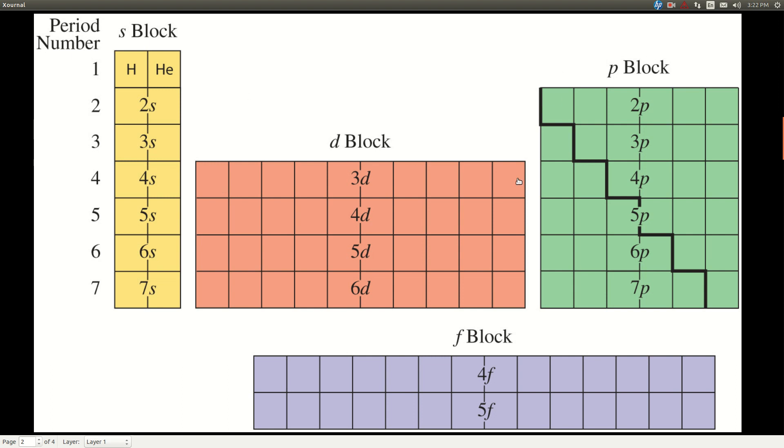Everything in the P block has its electron configuration ending in P something. If it's in the first column, it ends in P1, second column P2, P3, P4, P5, and everything in the sixth column in the P block,